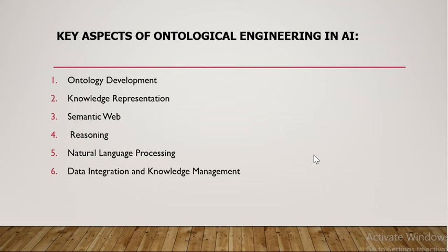Next is Knowledge Representation. Ontology provides a structured and formal way to represent knowledge. As already mentioned while discussing Ontology, it provides a structured and formal way to represent knowledge, allowing us to understand what the system is trying to convey.